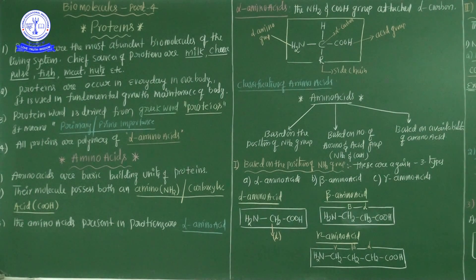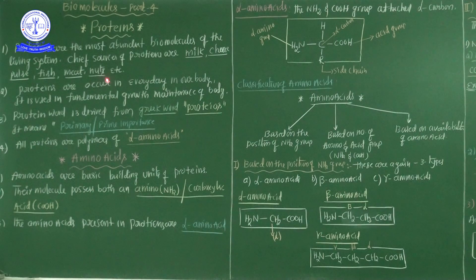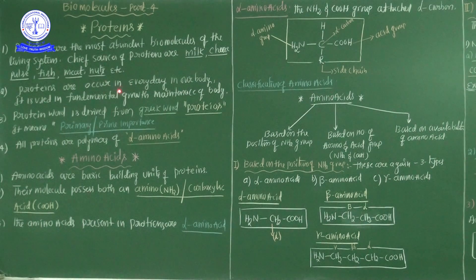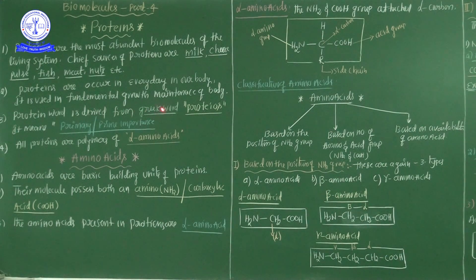Proteins play a very important key role in the living system. High protein sources — milk, cheese, pulses, fish, meat, nuts — are cheap and easily available. Bean seeds also have a huge percentage of proteins. Proteins occur every day in our body and are used in the fundamental growth and maintenance of the body.